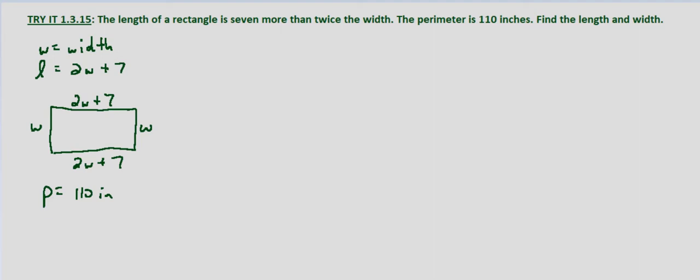Now we need to know what is the formula for perimeter. So we know that perimeter is 2 times the length plus 2 times the width, and we know that that equals 110 inches.